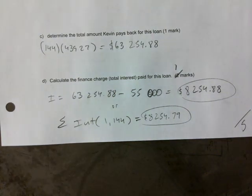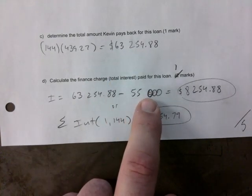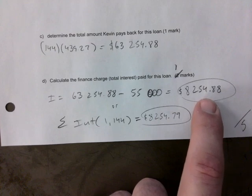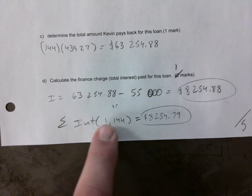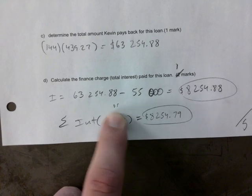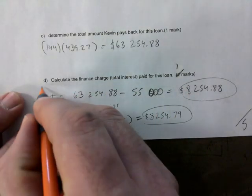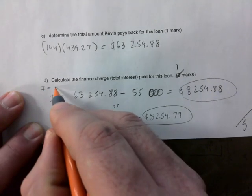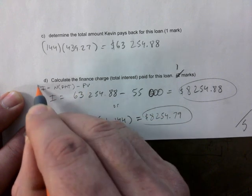And there are two ways to figure out your finance charge or the total interest. You can just take the number I just calculated, subtract the initial loan from it. Boom. Or you can use sum of interest. The problem with sum of interest is if you had to solve for N and it's a decimal, you cannot use this. Then you must use this one. And maybe I don't know if I gave you a formula, but it would be N times payment minus present value. That's the formula.